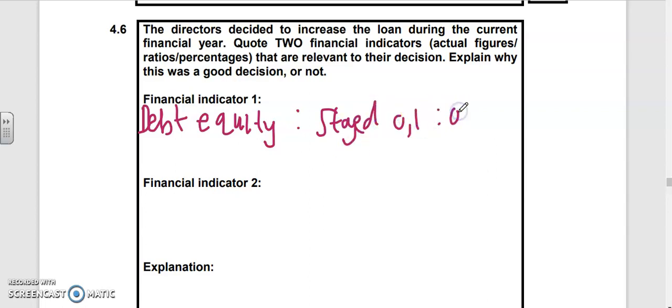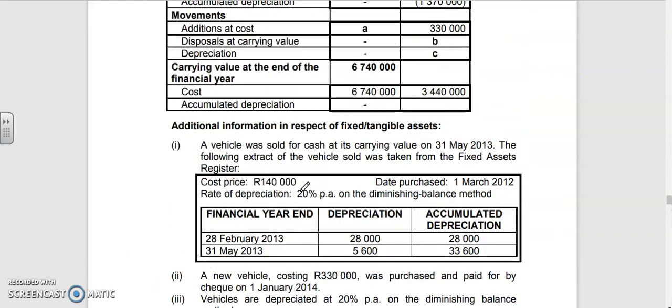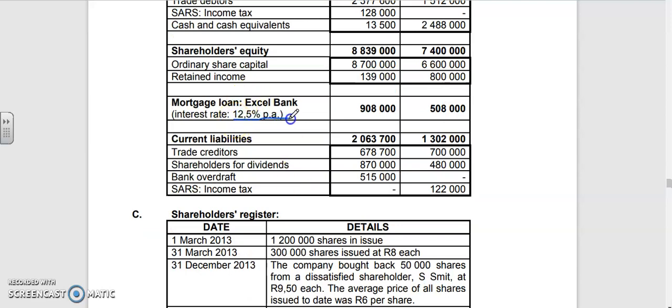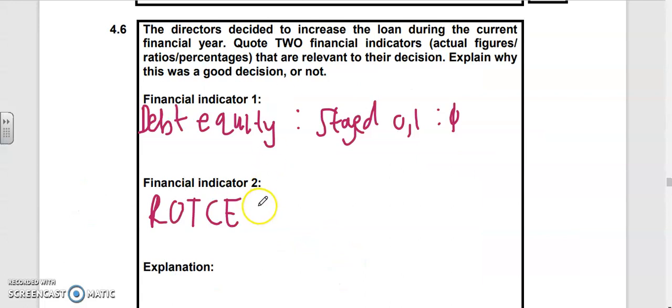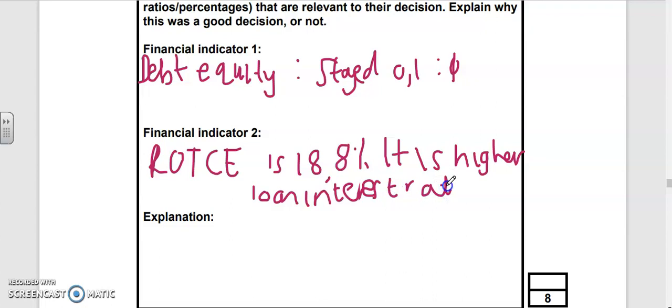If you want to know if it was good to take the loan, check the return on total capital employed. If it's greater than the interest rate, very good. This year's is 18.8 percent. The interest rate of the loan is 12.5 percent - excellent. The ROTCE is 18.8 percent, higher than the loan interest rate of 12.5 percent.